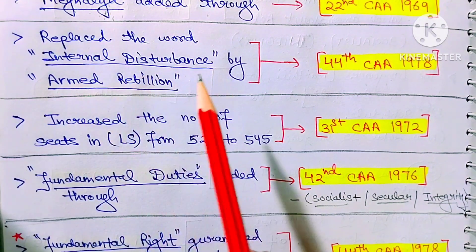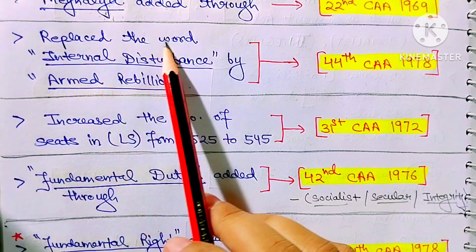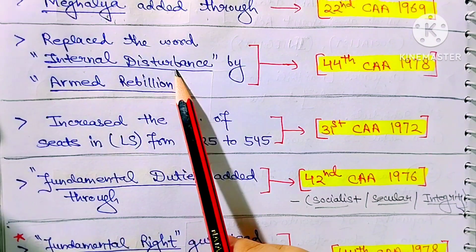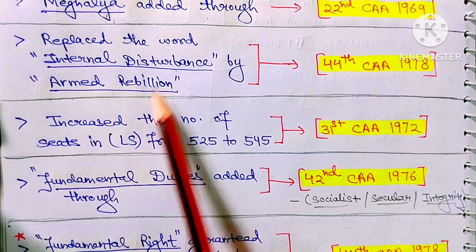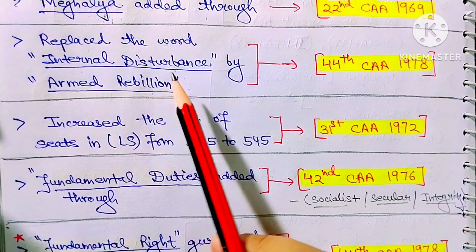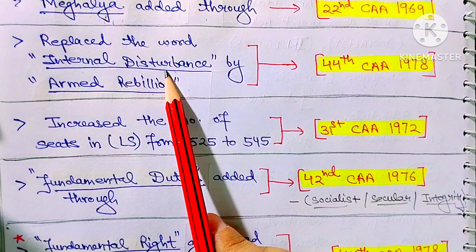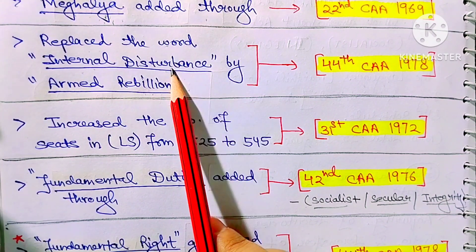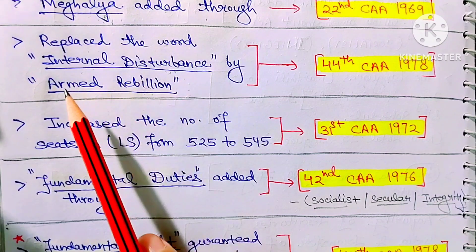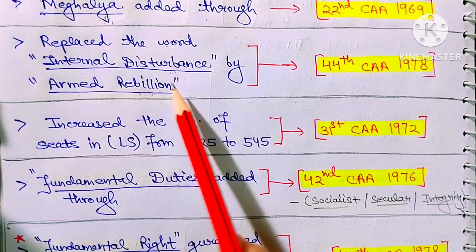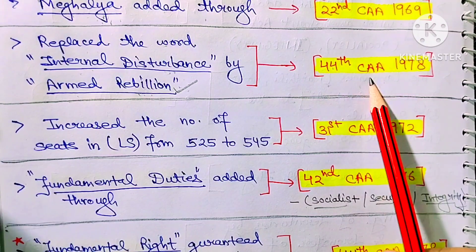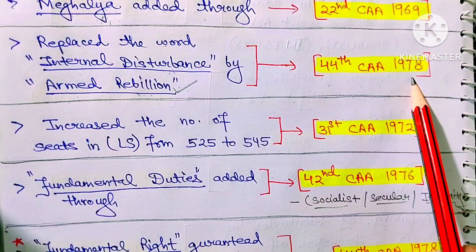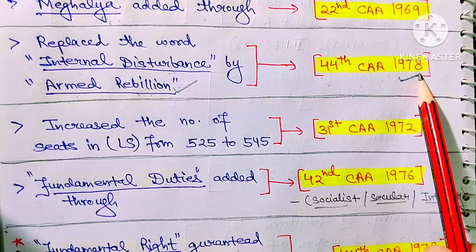Next: the word 'Internal Disturbance', which was used during Emergency, was replaced by 'Armed Rebellion' through the 44th Constitution Amendment Act 1978. So, the term used during Emergency was changed from Internal Disturbance to Armed Rebellion under this act.